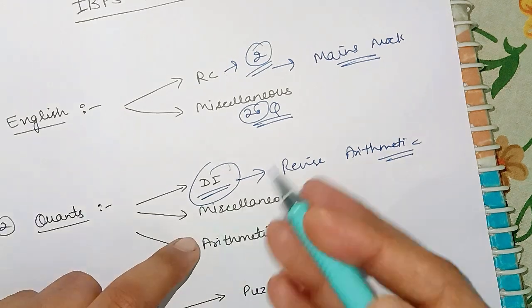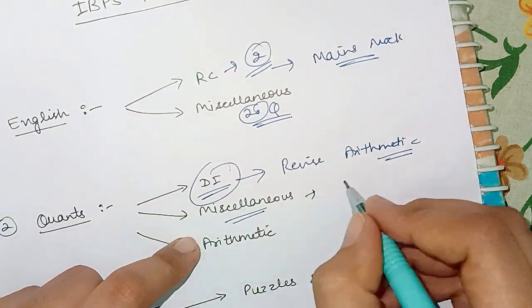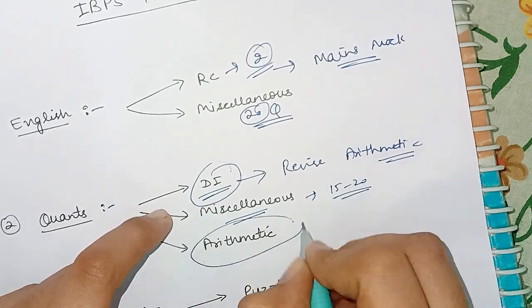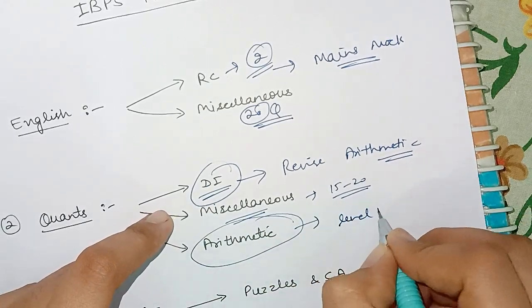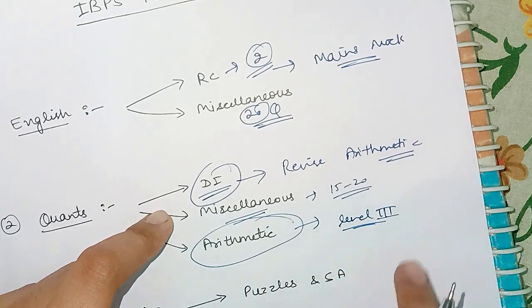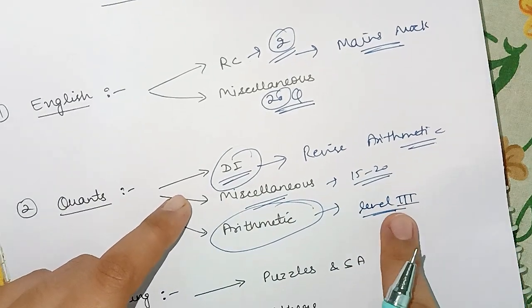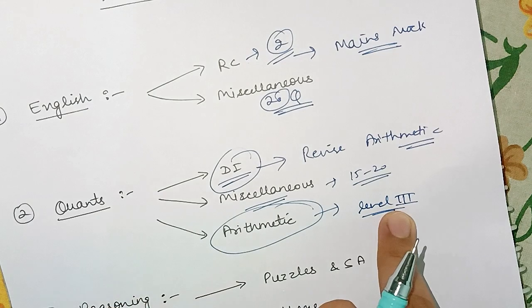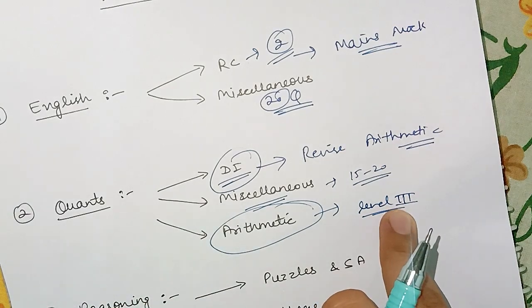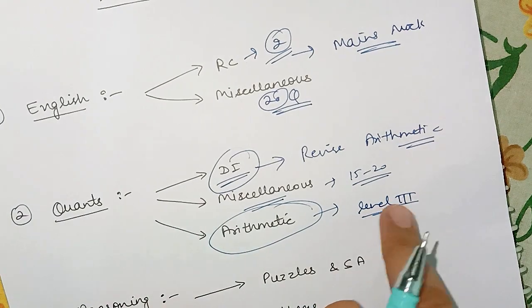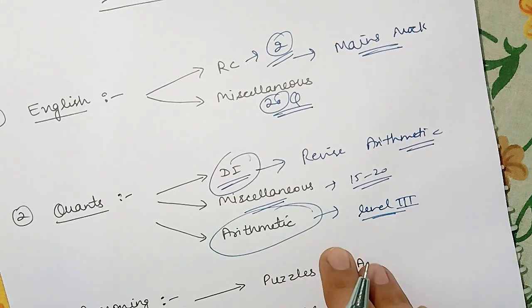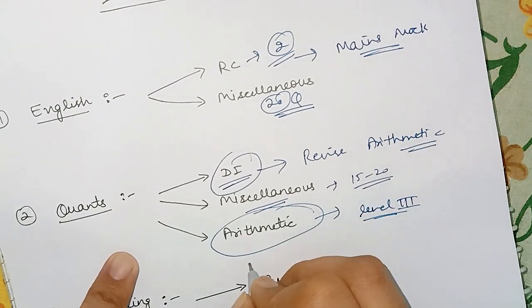Then there are miscellaneous questions. I used to solve 15 to 20 questions of miscellaneous and then arithmetic also. Level 3 questions you should solve. The level 3 questions are of mains level so you should solve the level 3 questions from any book you have or the notes you have made for level 1, level 2, level 3.